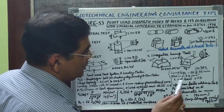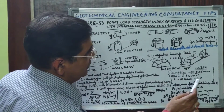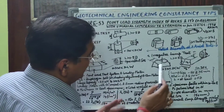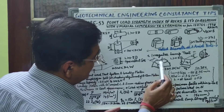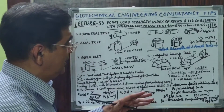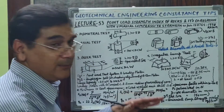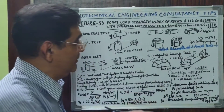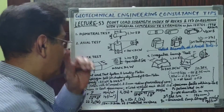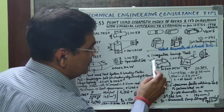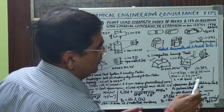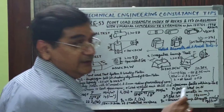L should be at least 0.5D — that is, the distance from the point of application of load to the edge when you place the sample in the machine should be at least 0.5D.